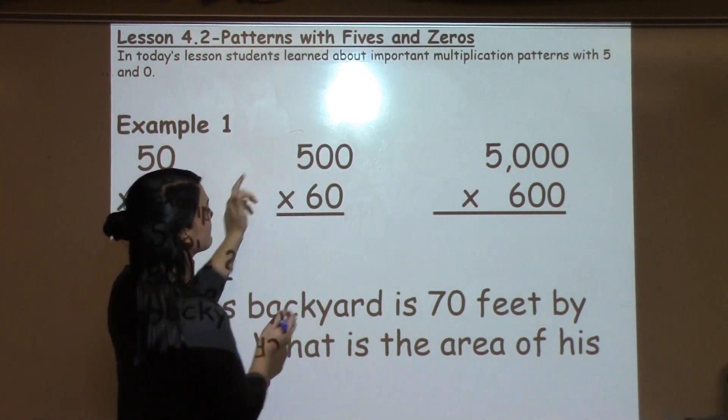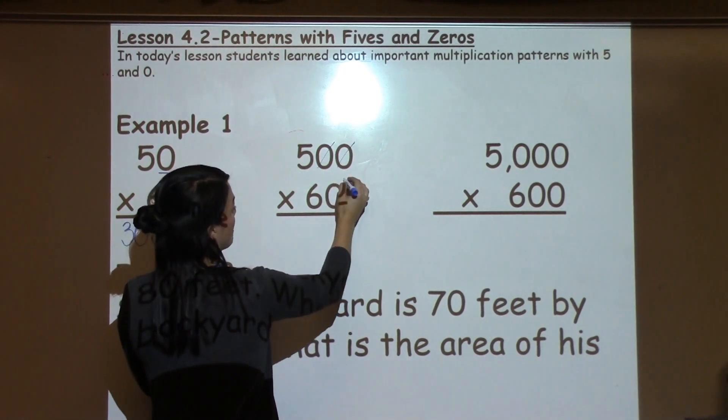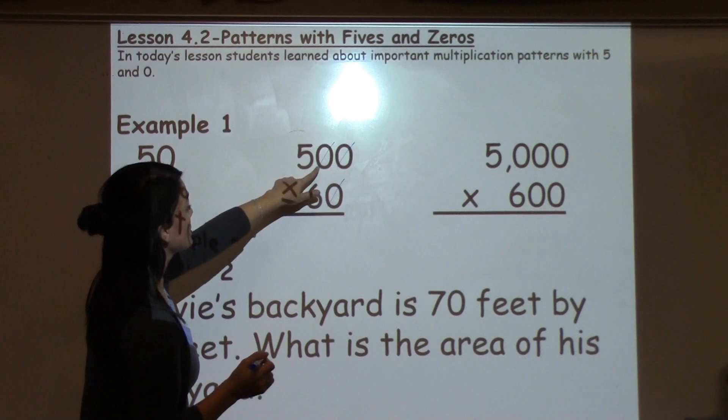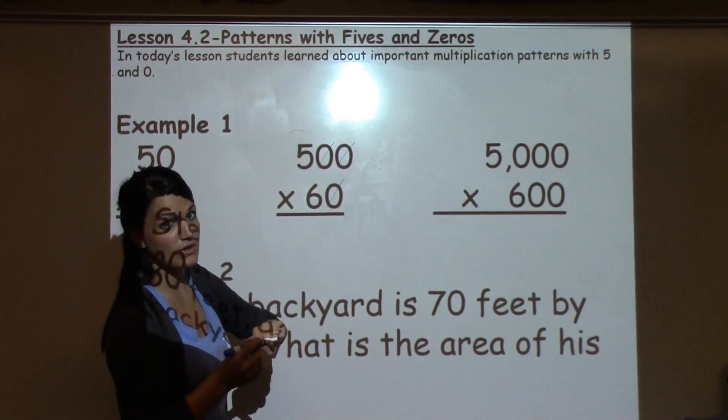So let's look at it again. Here I've got three 0s and one strategy I tell students is to cross off those 0s. So that helps you remember exactly how many you need to add back on.